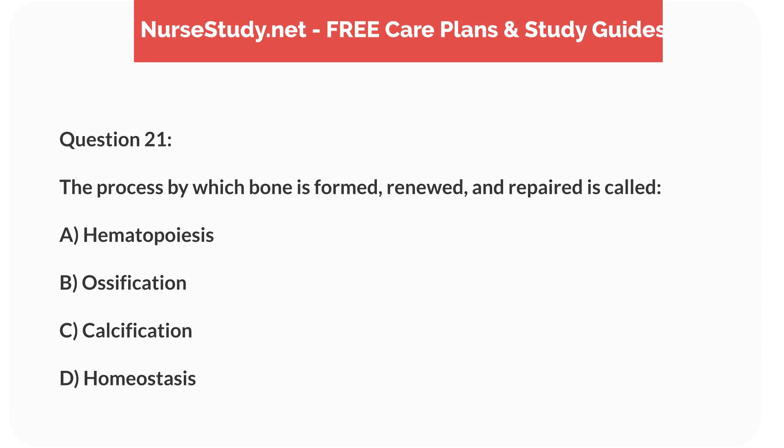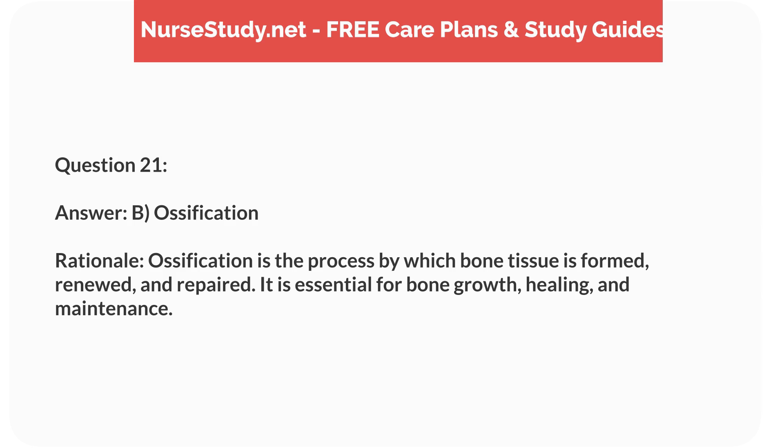Question 21: The process by which bone is formed, renewed, and repaired is called A) hematopoiesis, B) ossification, C) calcification, D) homeostasis. Answer: B, ossification. Rationale: Ossification is the process by which bone tissue is formed, renewed, and repaired. It is essential for bone growth, healing, and maintenance.